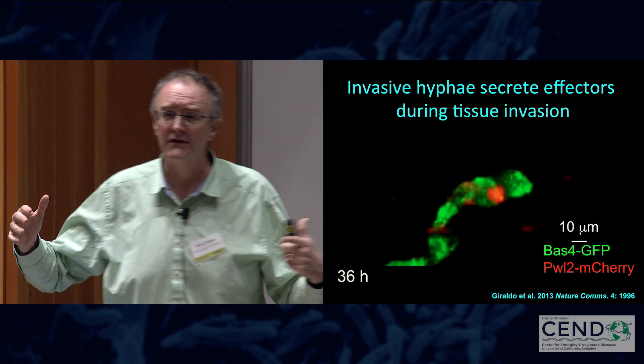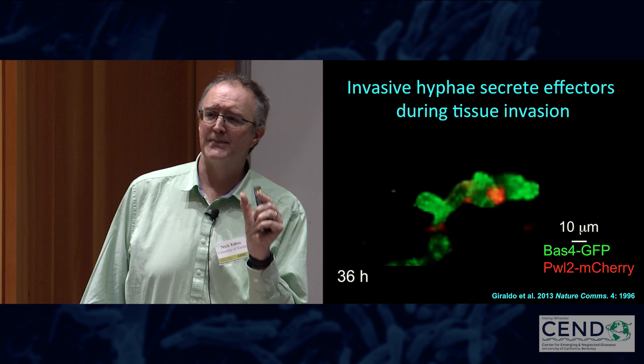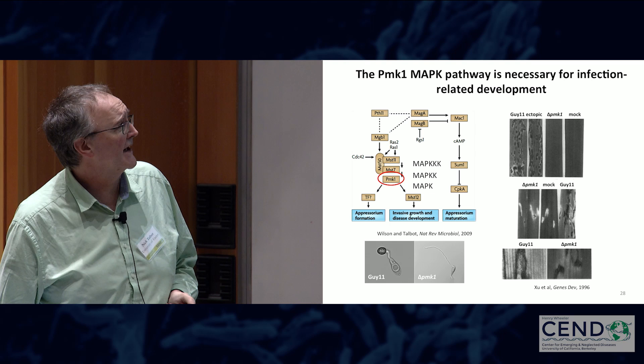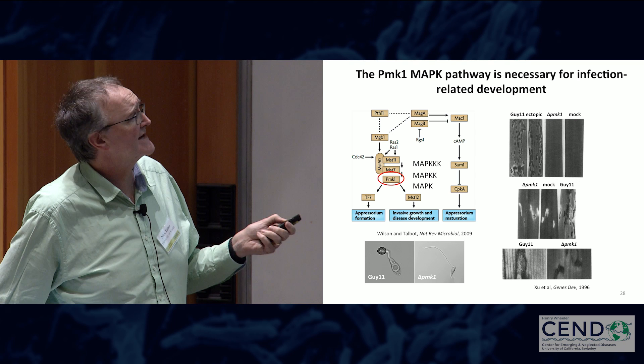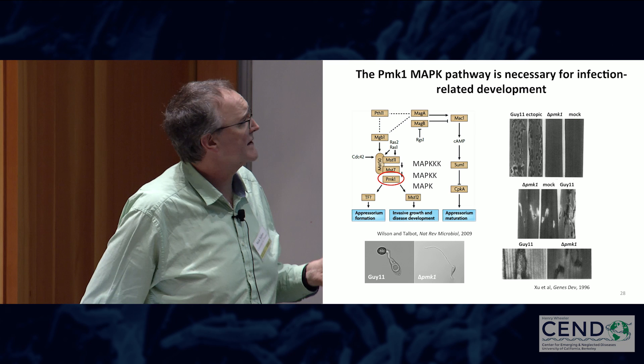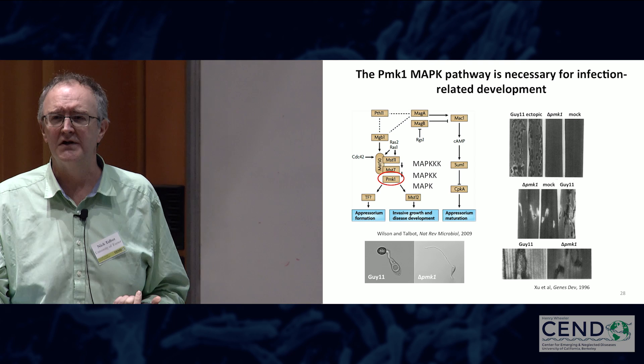So how is the fungus able to regulate its ability to move from one rice cell to the next? To study that, we need to revisit the PMK1 MAP kinase signaling pathway, which is absolutely essential for pathogenesis of the fungus. If we just knock out PMK1, we don't see an appressorium. But when you infect a wounded plant with a PMK1 mutant, or inject spores into living tissue, this mutant is never able to cause disease at any stage.